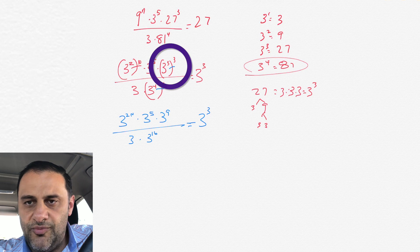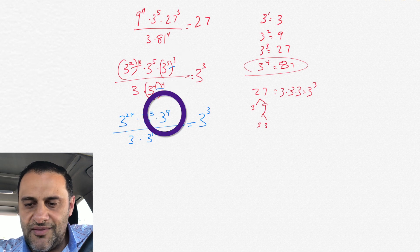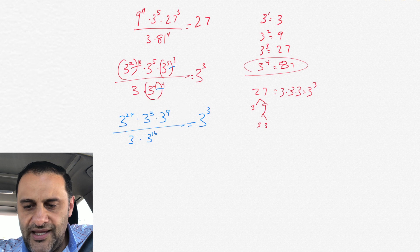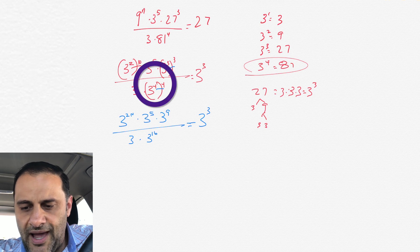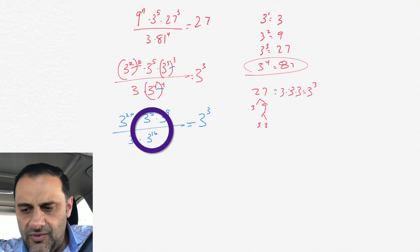And then when we have 3 cubed to the 3rd power, we actually multiply the 3 and 3. We don't add that, we multiply it. So 3 times 3 is 9, so that's 3 to the 9, and then divided by 3, and then we have 3 to the 4 to the 4th power, so we multiply the 4 and 4 to get 16, and all of that equals 3 to the 3rd.